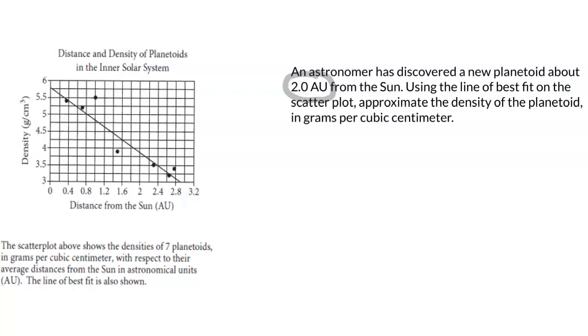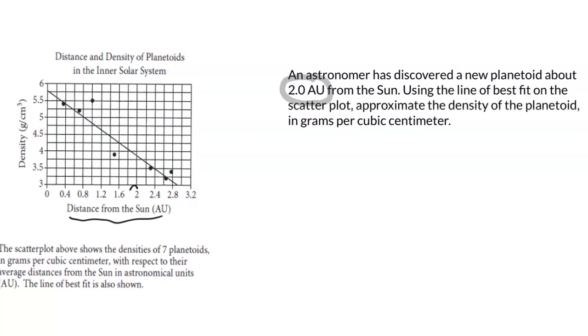Looking on that x-axis where I've got distance from the sun in astronomical units, 2 is going to be right here. I'm going to plot the point on the line of best fit that corresponds with 2 on the x-axis.